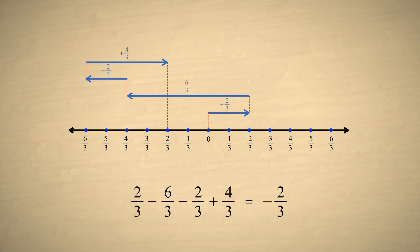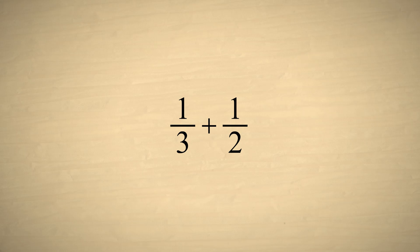Since the size of the division is not changed, the denominators are not affected. But how can we add or subtract fractions whose denominators are not the same? For example, let's say that we want to add the fraction one-third and one-half.